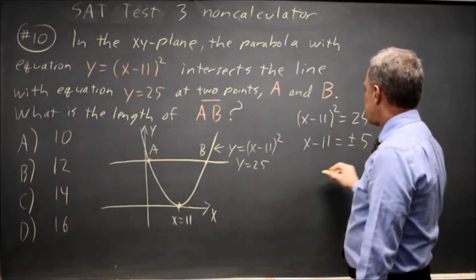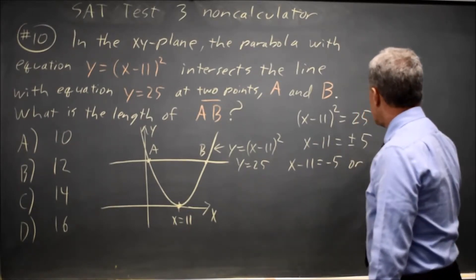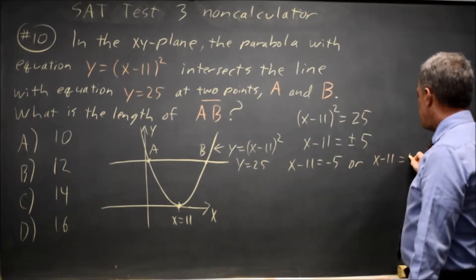Square root of 25 is 5. So x minus 11 equals negative 5, or x minus 11 equals positive 5.